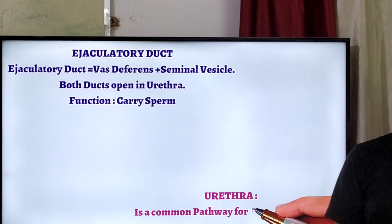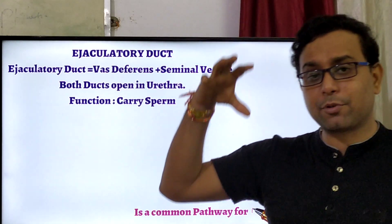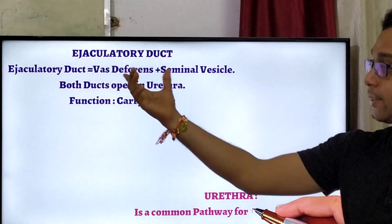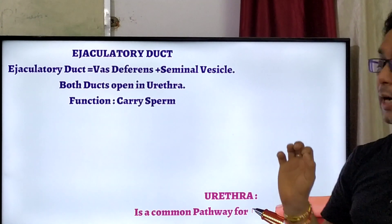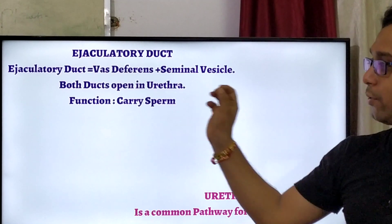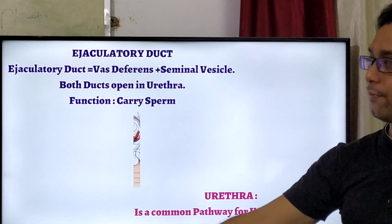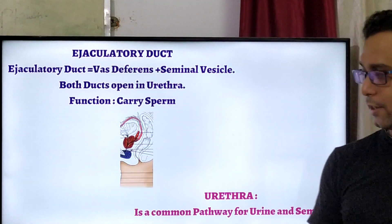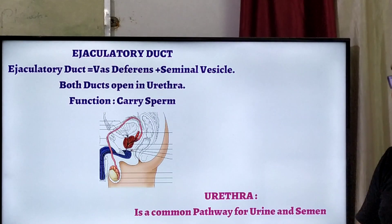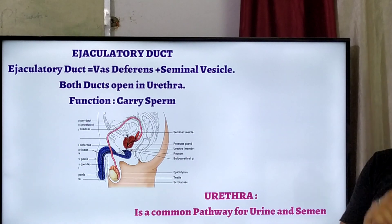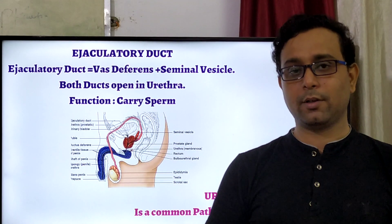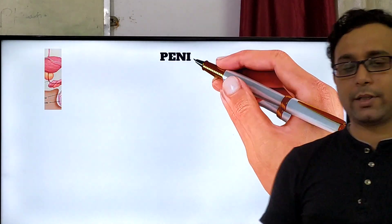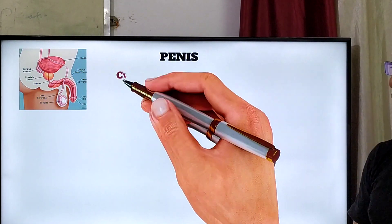Now we discuss the ejaculatory duct, which helps to eject the semen from the male reproductive part. The vas deferens and seminal vesicles — both ducts generally open into the urethra. The function of the ejaculatory duct is to carry the sperm. The urethra is a common pathway for both urine and sperm, so in the male there is only one passage.